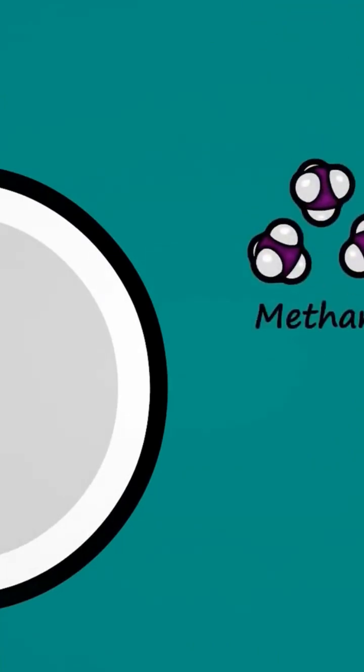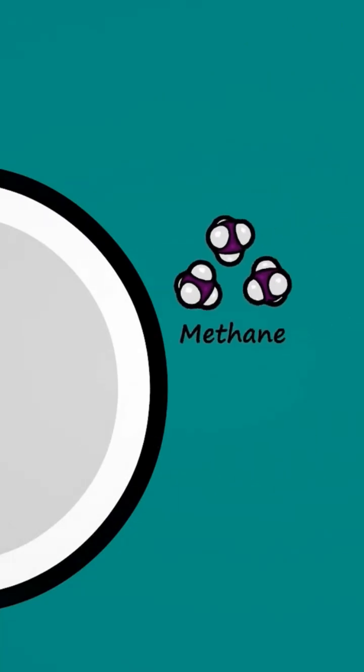In 1953, Stanley Miller of the University of Chicago conducted a famous experiment to simulate these primordial conditions. He filled a closed chamber with methane, ammonia, water, and molecular hydrogen, gases thought to be prevalent in Earth's early atmosphere, and repeatedly ignited an electrical spark.